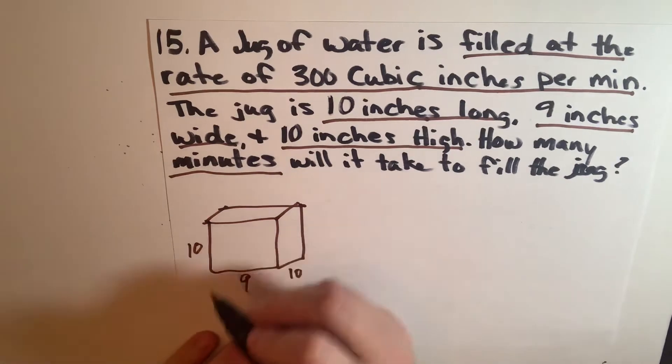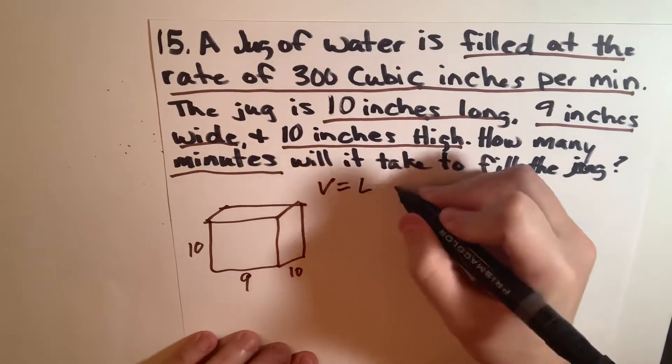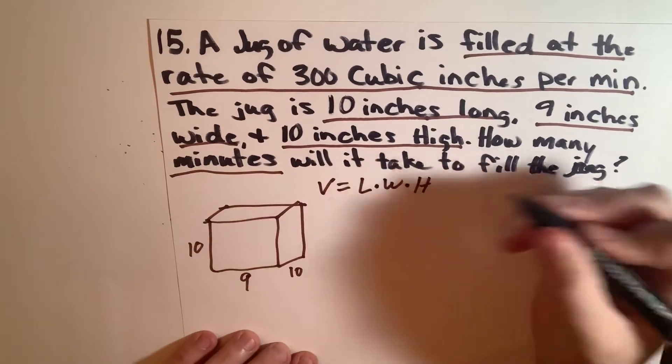So when you're finding the volume for something, you're going to use the volume formula which is length times width times height.